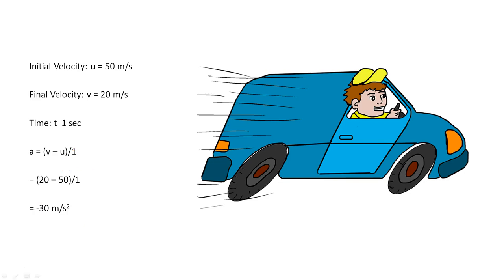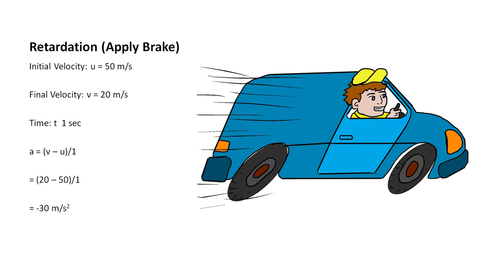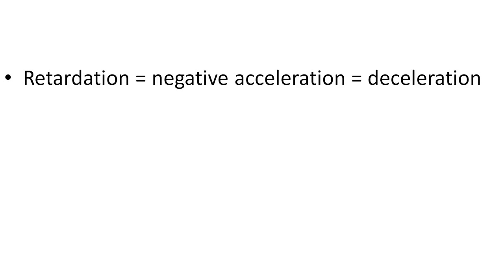Here you can see that by definition it is the same — final minus initial — but the final velocity is lesser than the initial velocity, which happens when we apply the brake. So the result is minus 30 meters per second squared. This is retardation, also known as negative acceleration or deceleration.